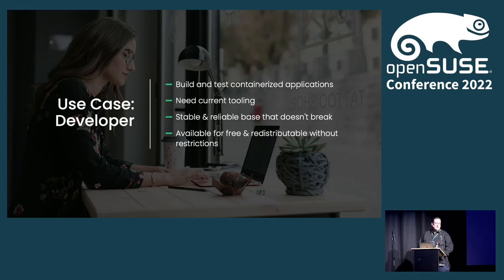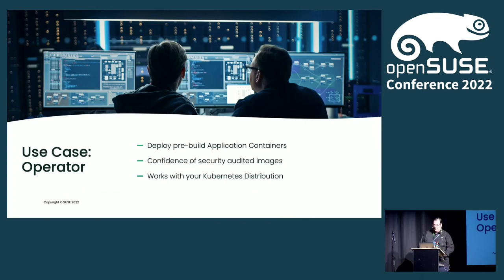The biggest benefit — especially for the OpenSUSE community — is that it's available for free and you can redistribute it without any restrictions. Some of our customers came to us asking if we had something for their scenario. We were working on exactly that: we can deliver pre-built application containers with a Python stack or a .NET stack already installed and provide support for that. They were looking for a solution and didn't know we had it, but we did, and we started making business with them because we had exactly what they were looking for.